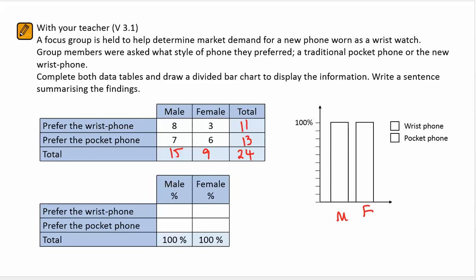Now not all data is numeric. Here we're looking to see if there's a difference between two categorical groups. We've got the male and female grouping, and they're asked if they prefer the wrist phone over the pocket phone.